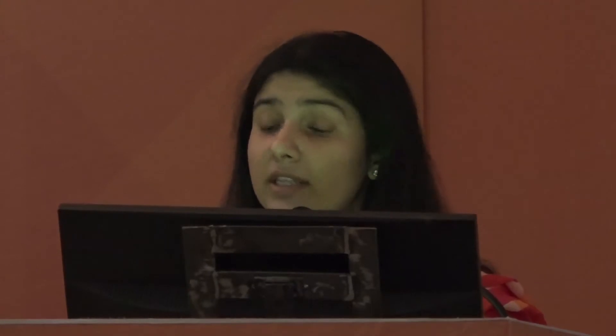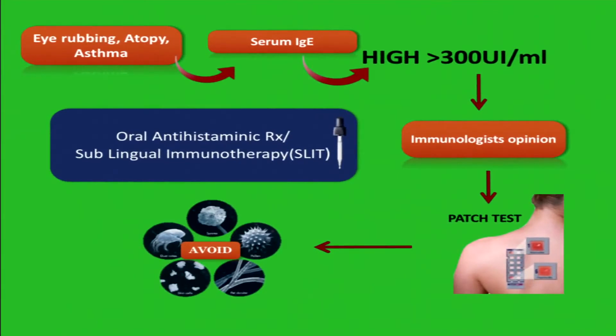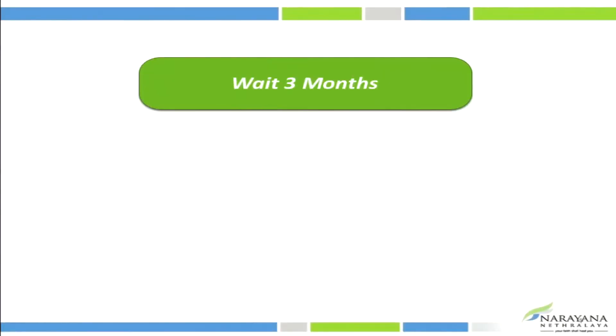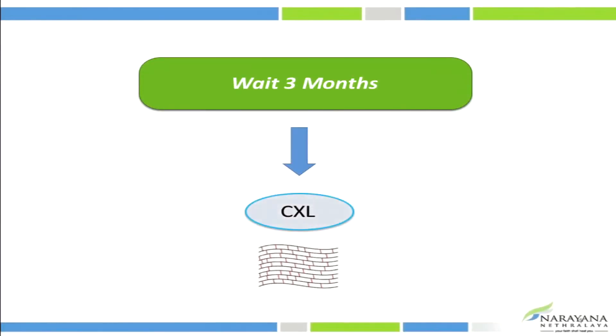We have published a 5-point normogram identifying high-risk characteristic scoring for progression, and the only modifiable risk factors in this are eye rubbing and atopic eye disease. To translate this into our clinic: patients with eye rubbing and allergic eye disease should avoid eye rubbing; we can start them on topical steroids and antihistaminic eye drops. If their serum IgE is high — which we consider more than 300 — we should get an immunologist's opinion, do a patch test, avoid the allergen, and start on therapy as needed. We should then wait 3 months before going ahead and cross-linking the patient.